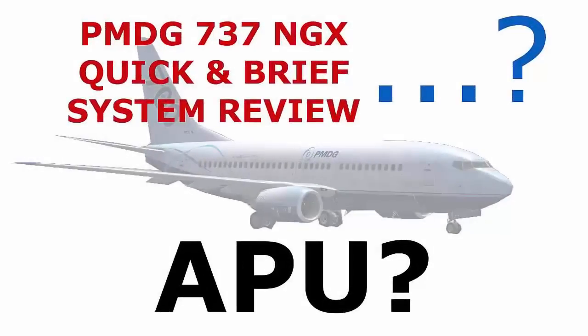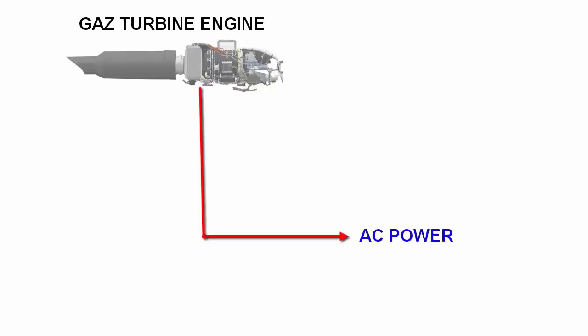PMDG 737 APU. In this tutorial we will have a brief overview of the Auxiliary Power Unit, or APU for short. The APU is a gas turbine self-sustaining unit which produces both AC power and bleed air for all airplane system needs.